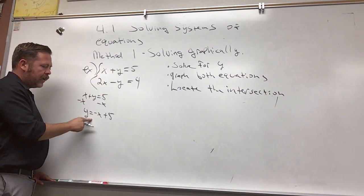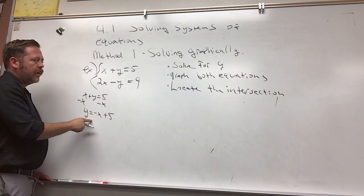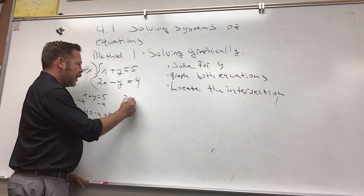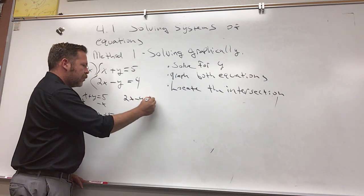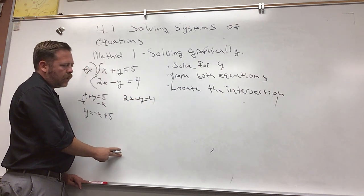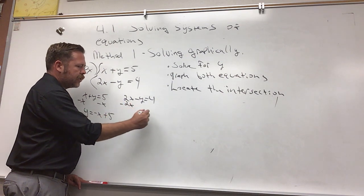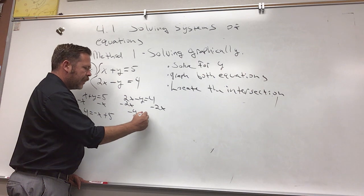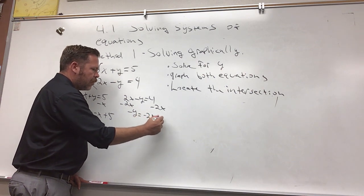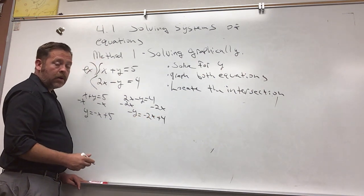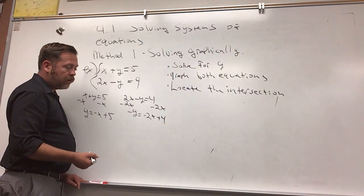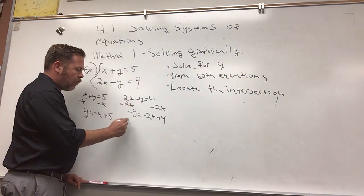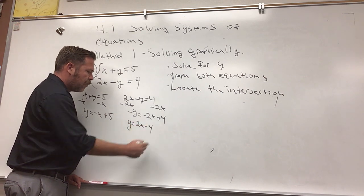The second one, I have 2x minus y equals 4. I think I could subtract 2x and I get negative y equals negative 2x plus 4. Then I'll multiply both sides by negative 1, or basically just change the sign of everything. Y is equal to 2x minus 4.